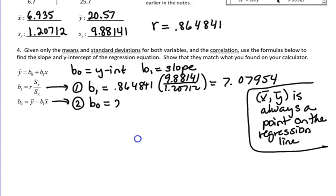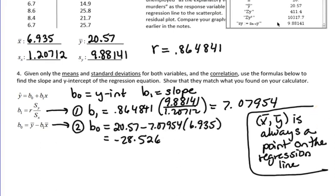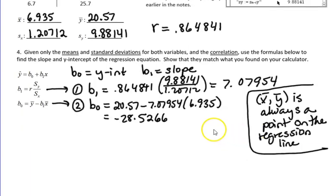So I'm going to substitute Y bar, which is 20.57, minus the slope, 7.07954. I'm going to use the value I found up here because that's what I would have done with the equations here. And then X bar is 6.935. So calculating B sub 0 then, I get negative 28.5267. Once again, that is just slightly off from what I got doing the regression, once again because of rounding.